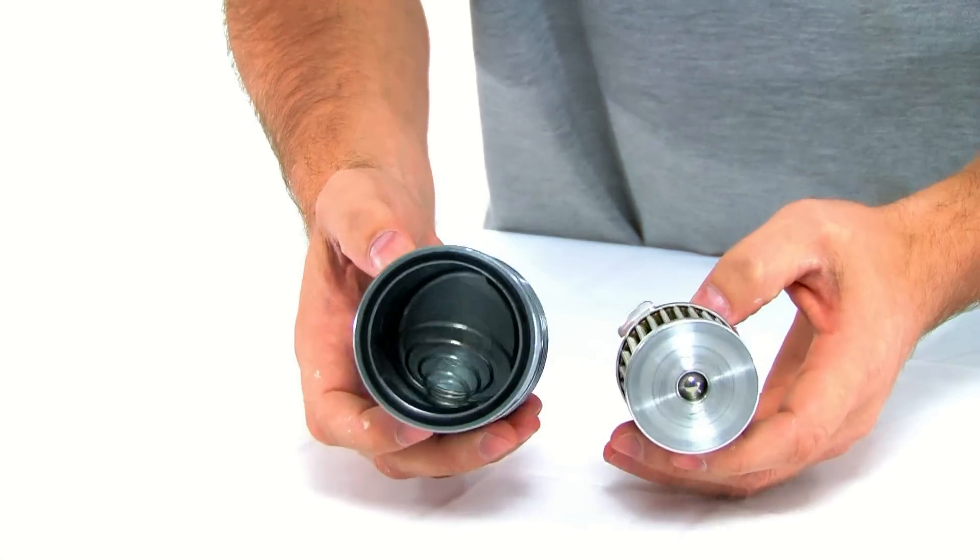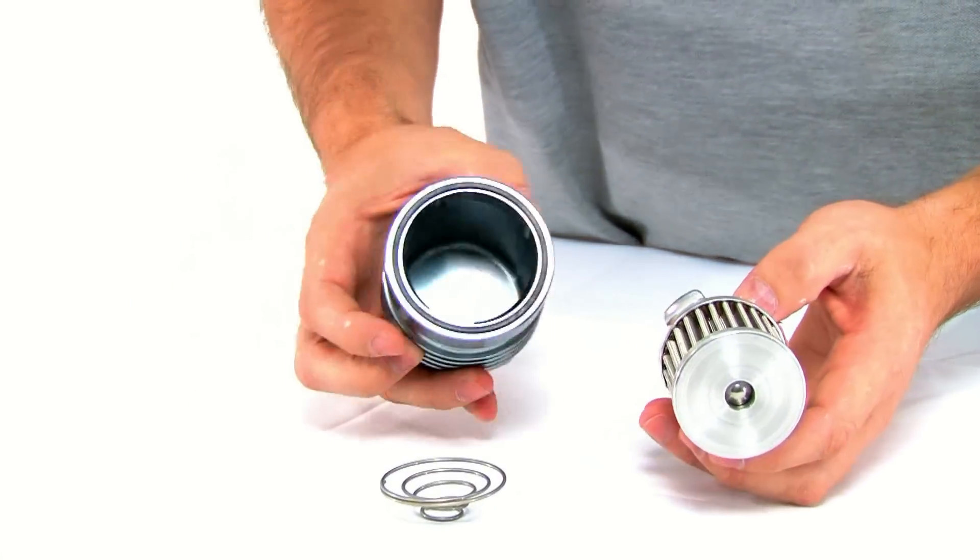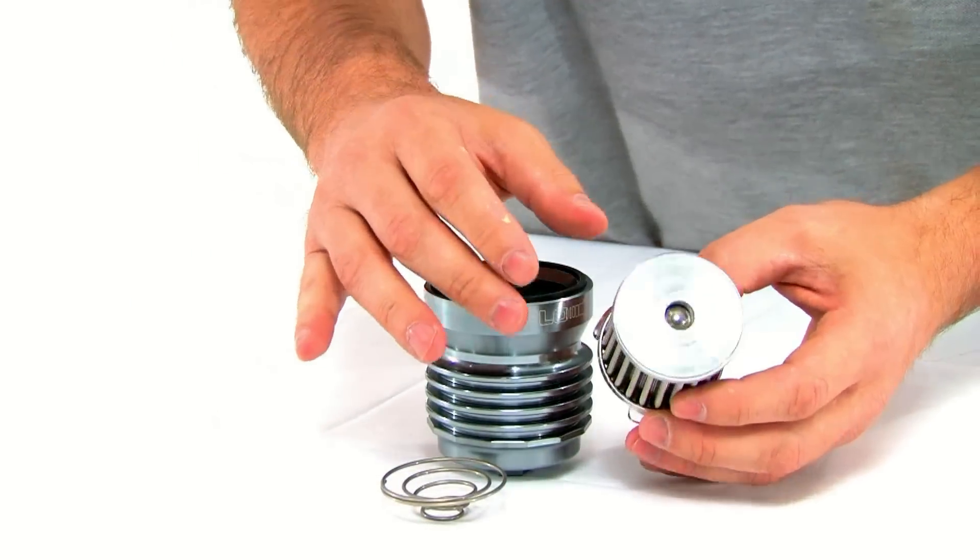You see the nice billet machine housing, you get a spring in there, comes out, that keeps your filter from rattling around.